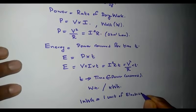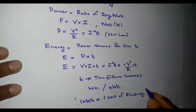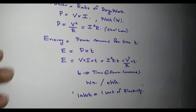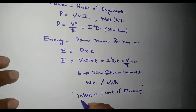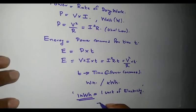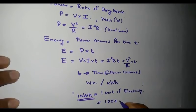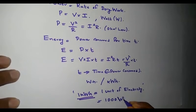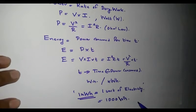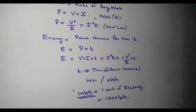So basically, when we represent the term 'one unit,' one unit is actually one kilowatt hour of electricity, which is equivalent to one thousand watt hours.